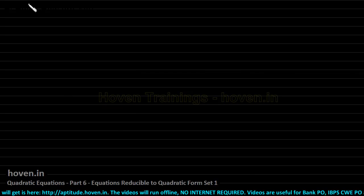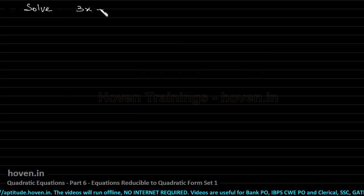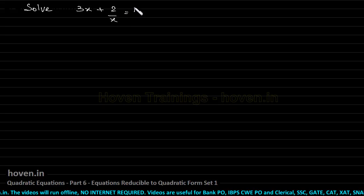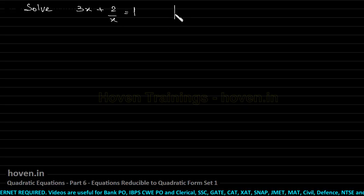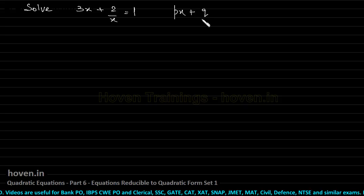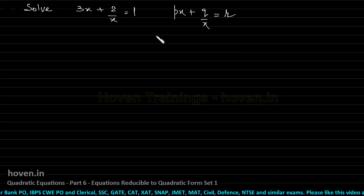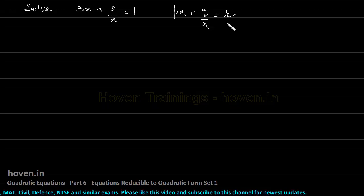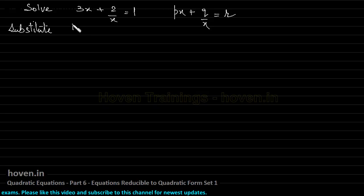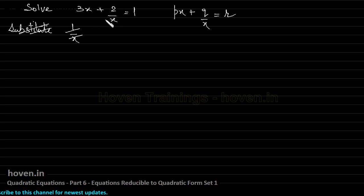The next equation is: solve 3x + 2/x = 1. This equation is also not quadratic. The general form is px + q/x = r. If you encounter a question in which you have the form px + q/x equal to some constant, you don't need substitution in this case. This is simpler than the other way round.